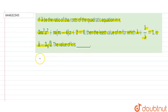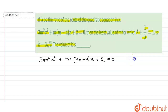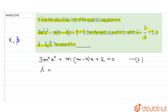The equation given to us is 3m²x² + m(m−4)x + 2 = 0. This is our first equation. The question says that lambda is the ratio of the roots of the quadratic equation. Let alpha and beta be the roots of the equation. According to the question, lambda = alpha/beta.